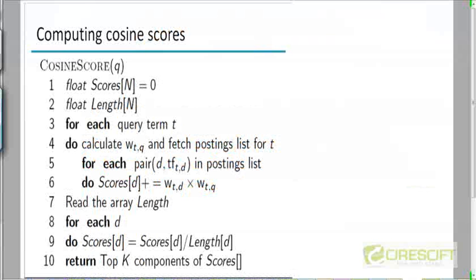How would you go about computing the cosine score between a query and every single document in your corpus? Now we are not talking about 3 or 4 documents — we are talking about a huge index which has millions of documents. You have a query coming in and you want to compute the cosine score between that query and every single document.